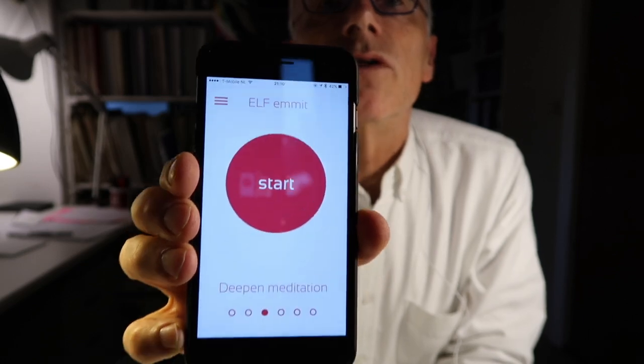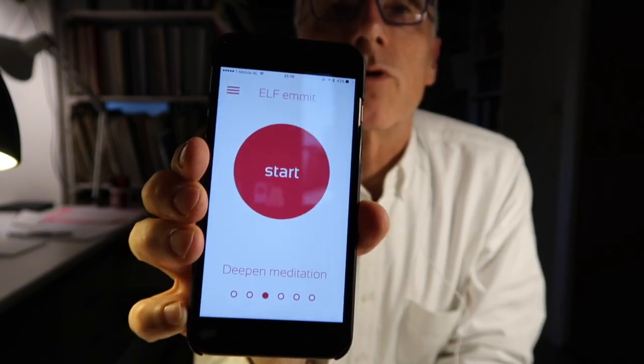I've already installed the app. You can download it. It looks like a very simple app, the Elf Emmet app. Welcome Tom Haak, I've already logged in. I can choose between a couple of programs: improve sleep, deepen meditation, reduce stress, improve focus, and fast learning. You can start each of the programs with a start button. If I'm able later to connect it to my iPhone, it's powered by the iPhone, I will maybe at a later stage let you know.